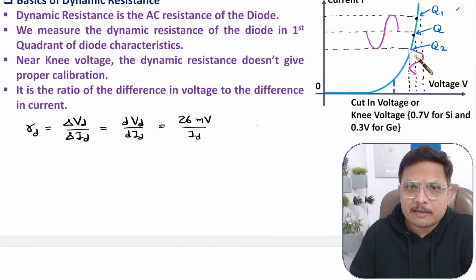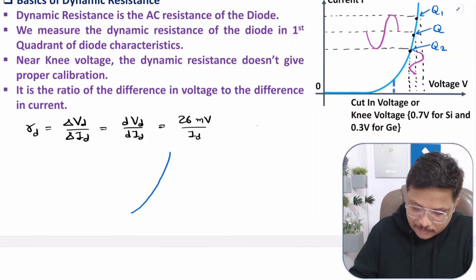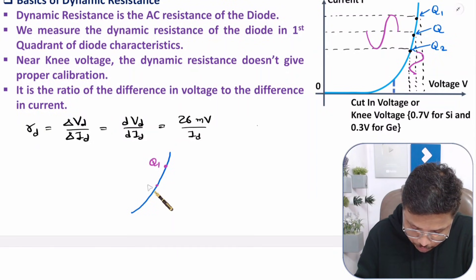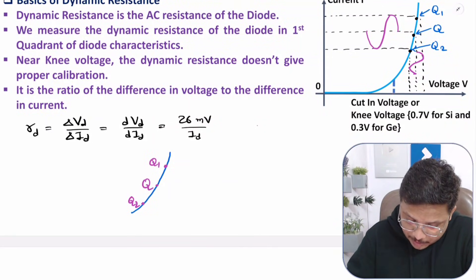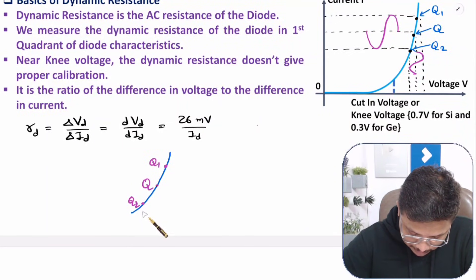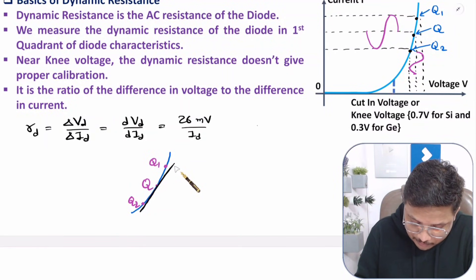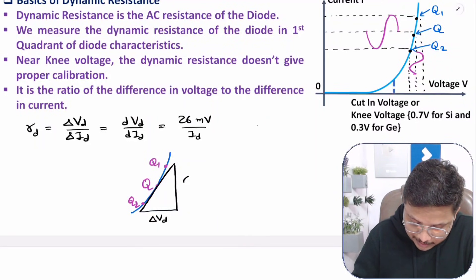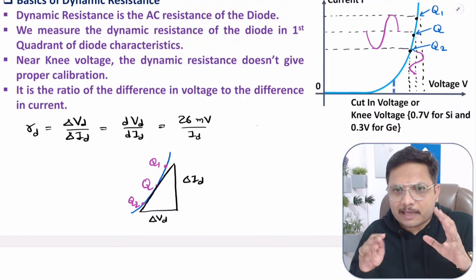Let me show this characteristic in a bit more zoomed version. Here I'm showing the characteristic where we have Q1, Q, and Q2 points. We take a tangent from Q, the center point, which looks somewhat like this. The tangent shows the variation of voltage with respect to current — horizontally we have variation of voltage, that is delta Vd, and vertically we have variation of current, that is delta Id. This slope is the dynamic resistance. Practically, that is how one can calculate dynamic resistance.